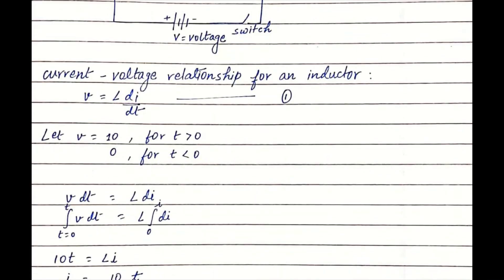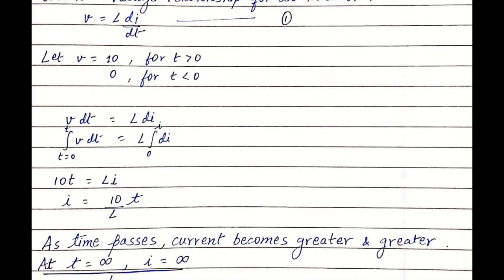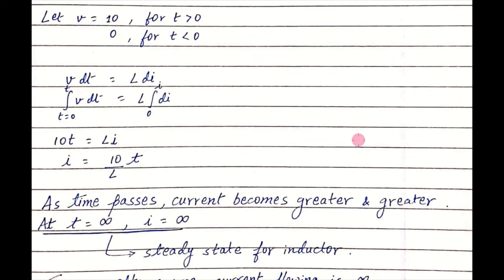Now let us take an example where the voltage source magnitude is 10 volts. I can represent the voltage source as V equals 10 for time t greater than 0, and V equals 0 for time t less than 0. By solving this equation I finally get I equals 10/L × t. I am not going into the mathematics — I'm just trying to make you understand the concept. So I equals 10/L × t, and we can see that current I is directly proportional to time t.